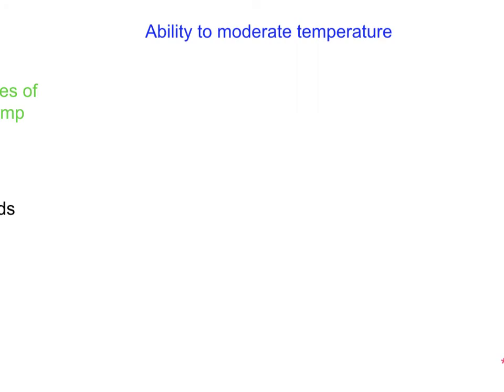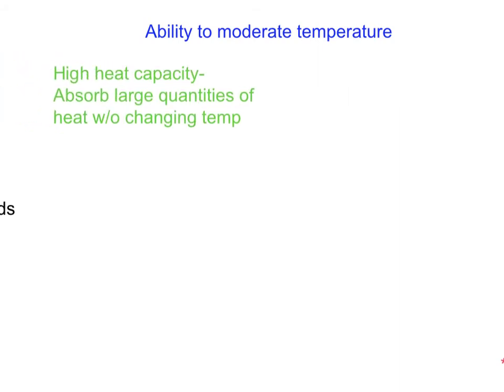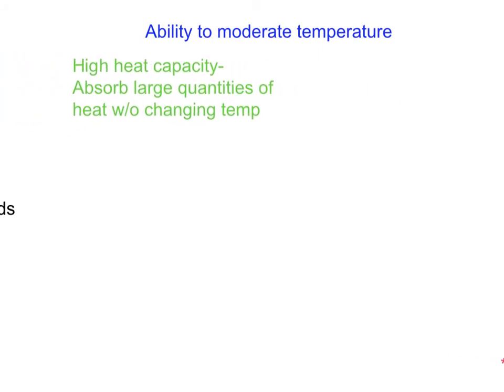The second property of water is its ability to moderate temperature. Water has a very high heat capacity — the amount of heat needed to raise one gram of water one degree Celsius is quite high. As a result, water can absorb large quantities of heat without changing temperature. This is important for living organisms since we contain so much water — it makes water a very good thermoregulator.